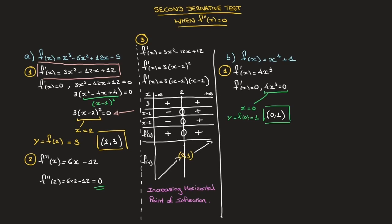We move on to step 2, where we attempt to use the second derivative test. Starting from f'(x), we differentiate to find f''(x) = 12x². Evaluating this second derivative at the stationary point — when x = 0 — gives f''(0) = 0. So once more the second derivative at the stationary point equals zero, and the second derivative test is inconclusive. Without hesitation, we move on to step 3: studying the sign of the first derivative.